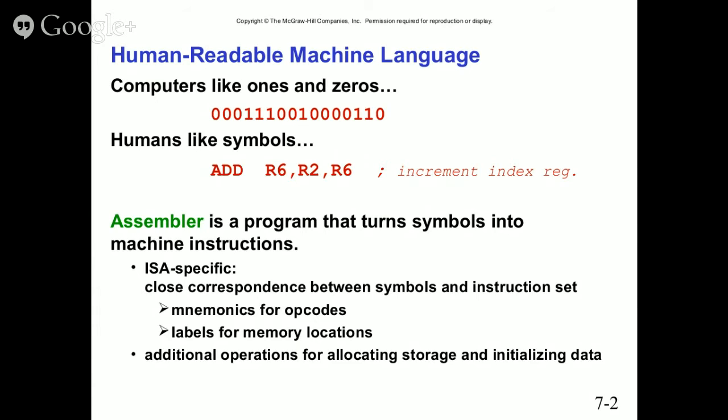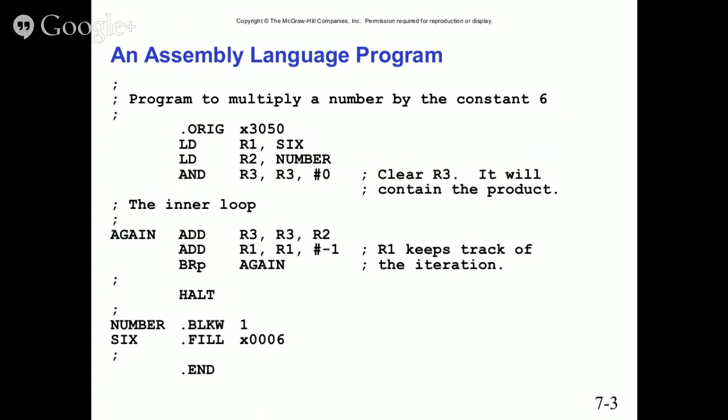You have mnemonics for opcodes, labels for memory locations, and a close correspondence between symbols and instruction sets. One issue with assemblers is that if you're used to one, like NASM, and switch to another, the actual coding can vary. Note that these items can be hardware-specific, so you may need to look up some commands as they may differ.